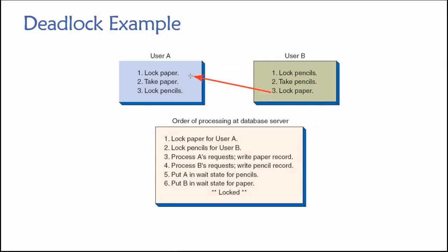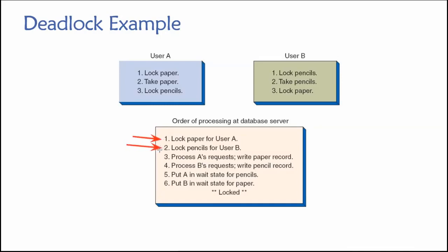User B is requesting a resource that is currently locked by user A. Meanwhile, user A, once they reach their next step, is requesting a resource that is already locked by user B. So both are just waiting for the other to unlock. Looking at the order of processing at the database: the database arbitrarily chooses to process user A's first request, locking paper for user A, and then locks pencils for user B — so both paper and pencils are locked. Then it handles A and B's requests to do whatever they want with their respective resources. Then we reach the point where A and B are requesting exclusive access to resources already in use by the other user.